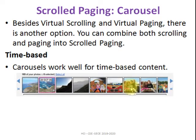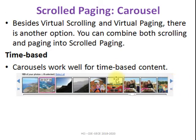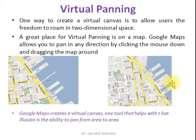The next type is scrolled paging, also called a carousel. It is mostly used on a timeline basis — for example, if you have images or videos arranged on a timeline. Continuous images are fixed in the page with navigation buttons for left and right. If you click the navigation, the images scroll, and you can select any one image from the carousel.